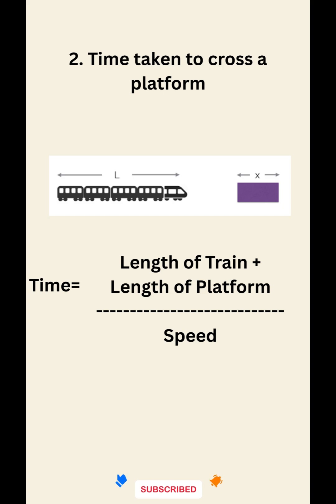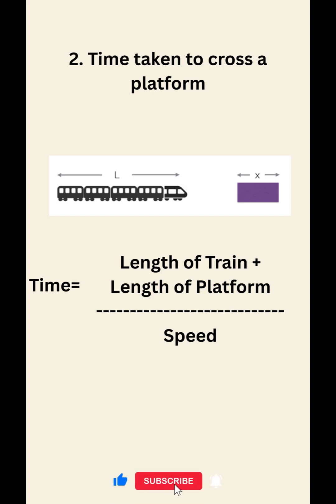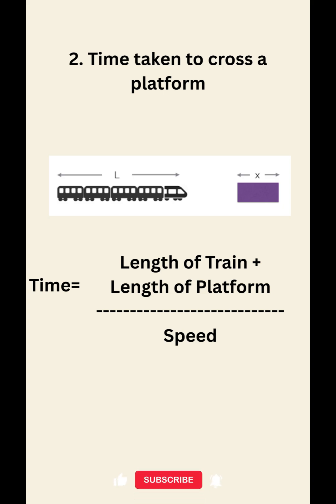Train crossing a platform. When a train crosses a platform, total distance equals train length plus platform length. Formula: time equals train length plus platform length, divided by speed.